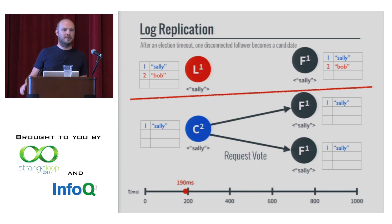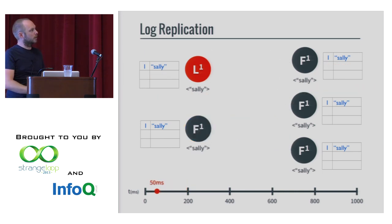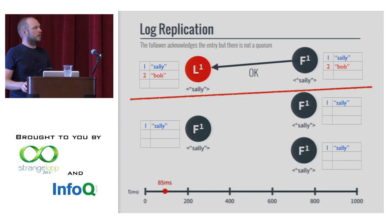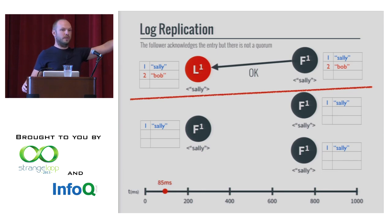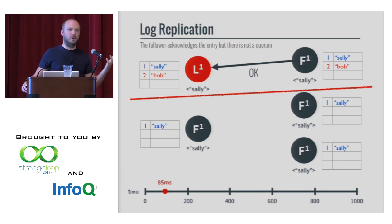Question: what if the leader commits Bob and then gets partitioned before sending the final commit message, and the cluster elects a new leader? If it actually committed Bob, it would have had a majority, so Bob would be on the majority of nodes. Even though it's committed on the leader and then it splits off, those other nodes still have the most up-to-date log. When they determine a candidate and new leader, they'll pick the person with the most recent log. So you're always ensured that the up-to-date log is there — they'll elect that person and tell everyone to finally commit Bob.